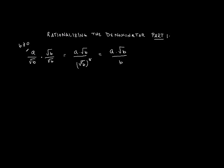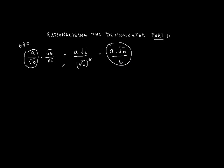Starting off with a over the square root of b and then manipulating it, we can transform it into a times the square root of b over b. They are equal to each other. So let me rewrite them: a over the square root of b equals a times the square root of b divided by b. They are the same value.